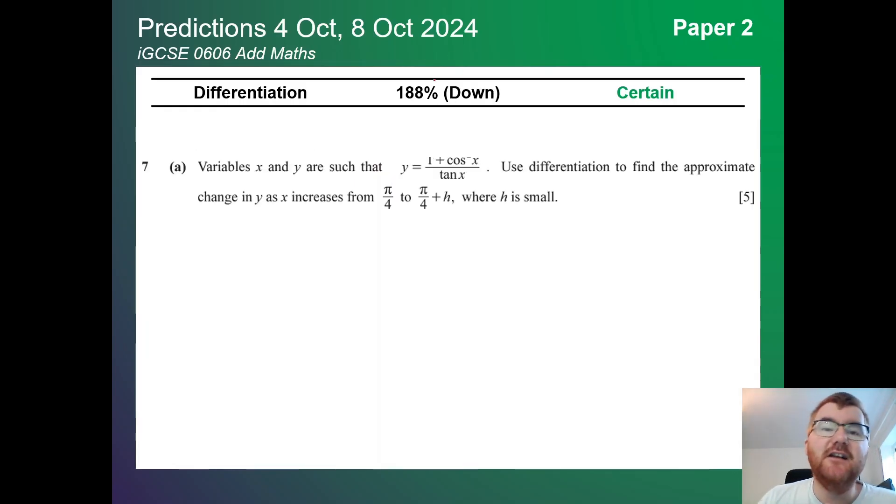Differentiation slightly down but also a whopping 188%. That is huge. This is a topic you should really revise. Here we've got a little bit of trigonometry also. Notice they like these kinds of questions. Something to be aware of on ad maths specifically.